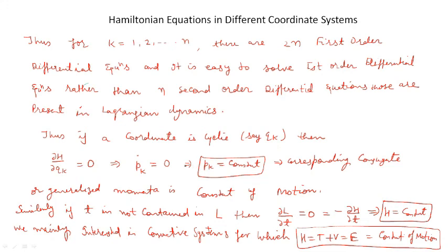This means if a coordinate is cyclic in the Hamiltonian, then the generalized momenta are constants of the motion. Similarly, if t is not contained in L, then del L over del t equal to 0, and we can say del H over del t equal to 0, which means H is equal to a constant. Thus for a conservative system the Hamiltonian is constant and equals T plus V.